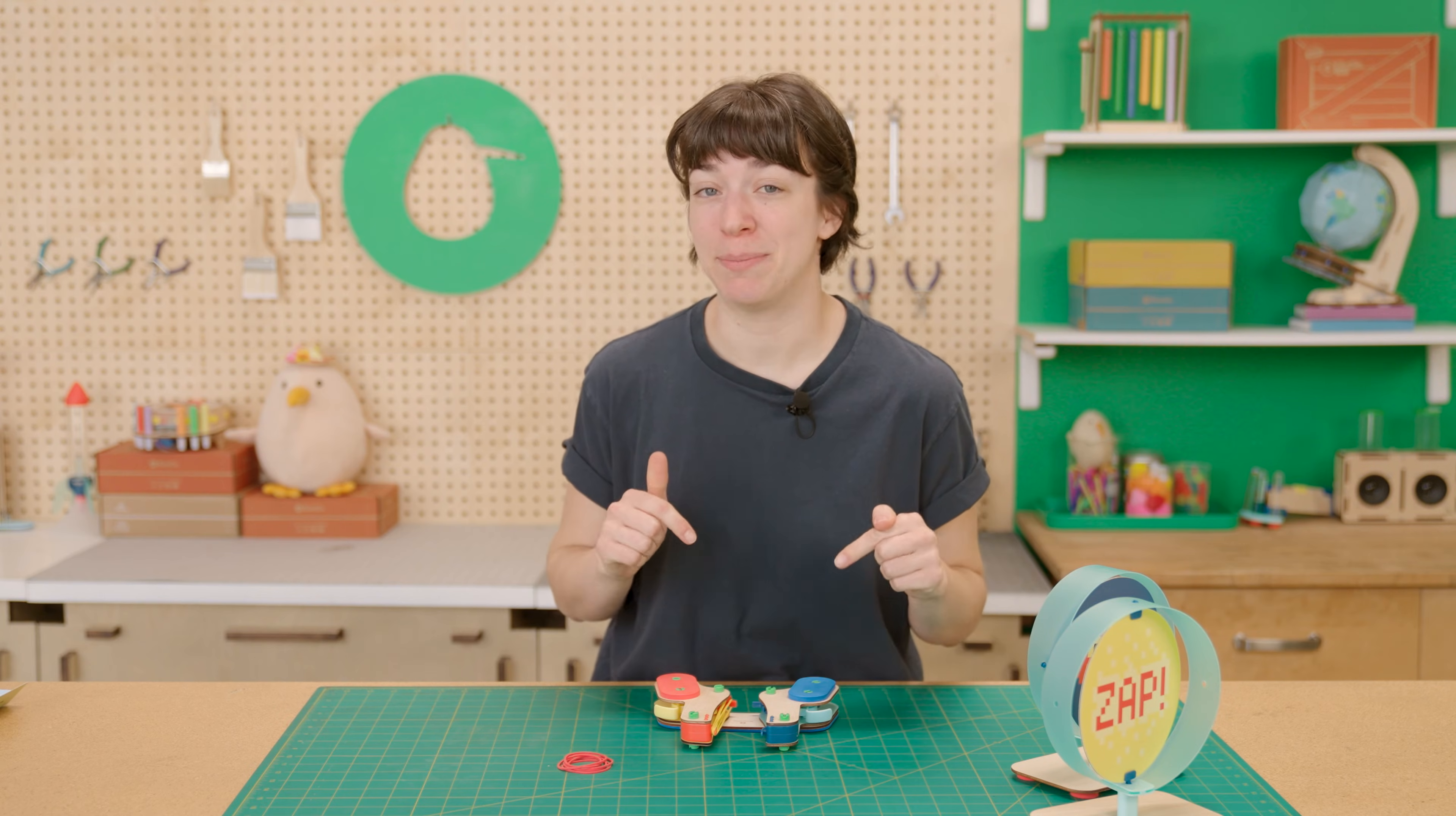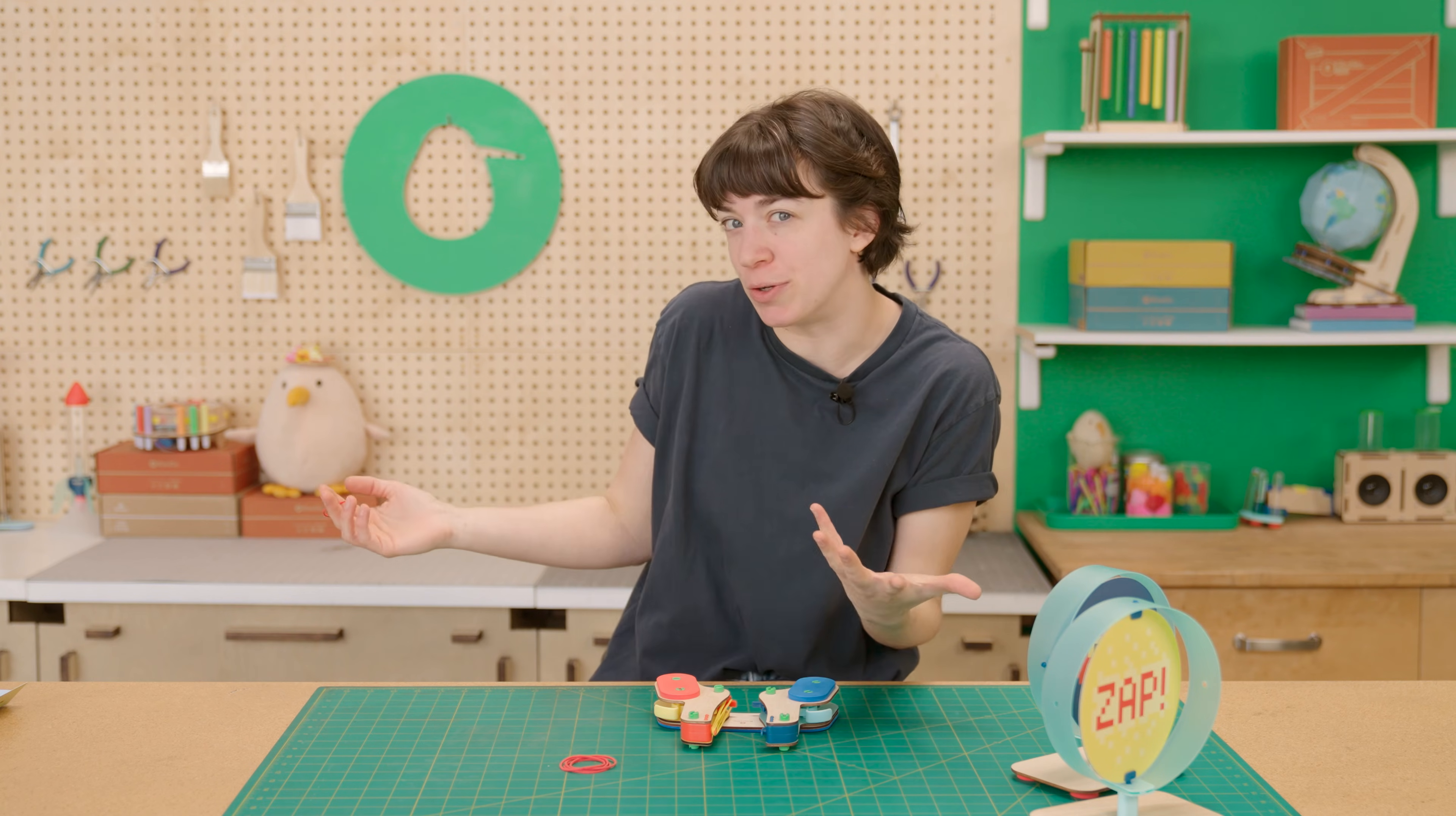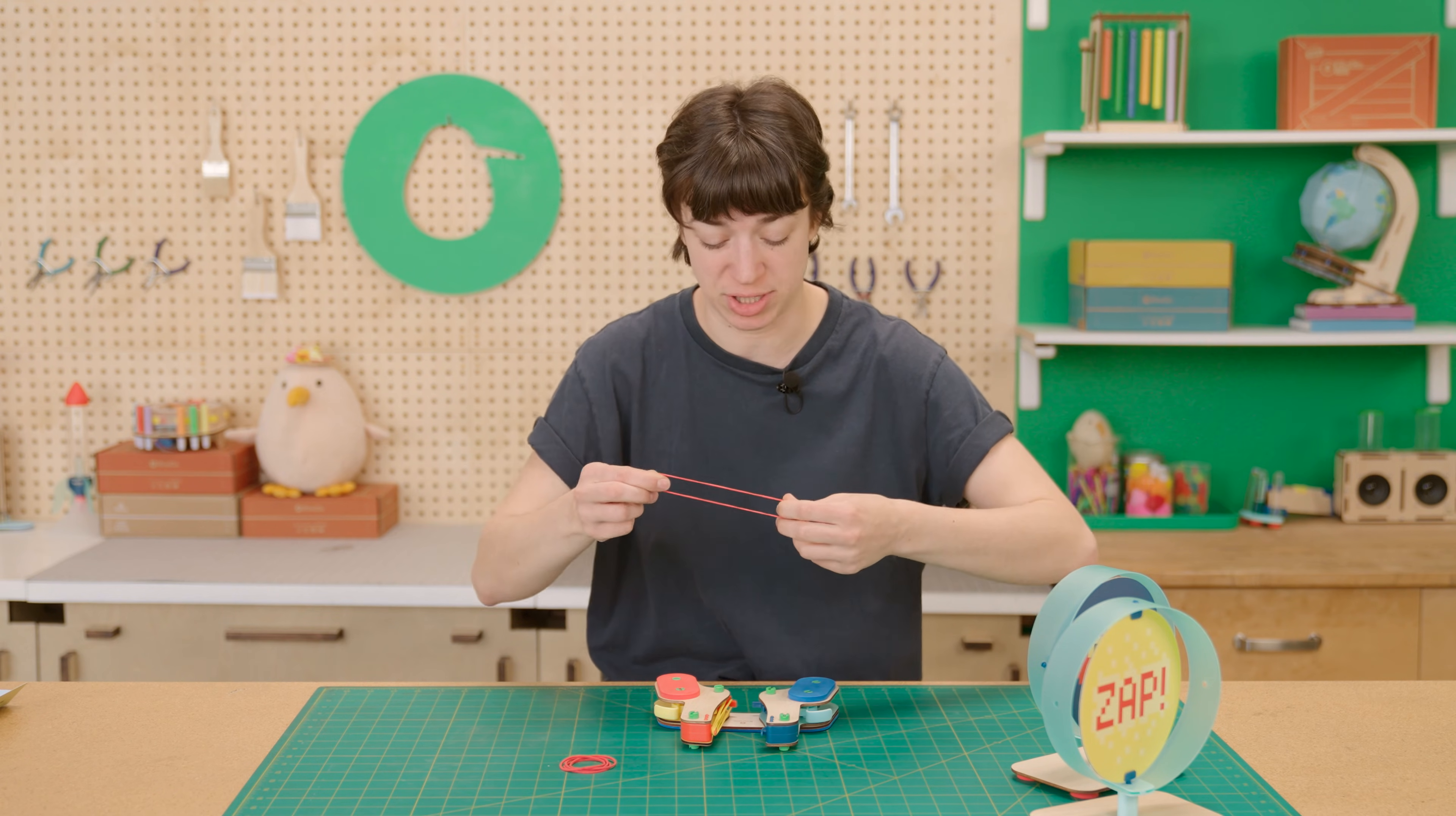Did you know that your rubber band blaster is actually powered by two types of energies? The first one is potential energy. So, potential energy is when there's a bunch of potential for a bunch of energy to get released. So basically, if you stretch this rubber band, you're loading it up with a ton of energy.